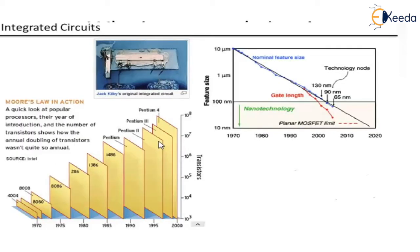Now, why do we need integrated circuits? Gordon Moore predicted in the early 1970s that the number of transistors per chip has continued to double approximately every one and a half years. At the same time, the minimum dimension of transistors has dropped from about 25 micrometers in 1960 to about 12 nanometers in 2015, which resulted in a tremendous improvement in the speed of integrated circuits.